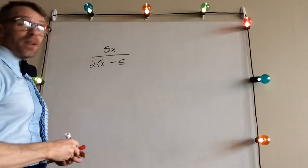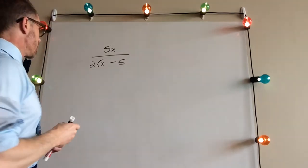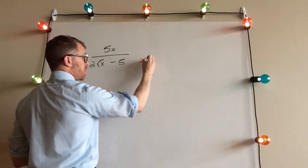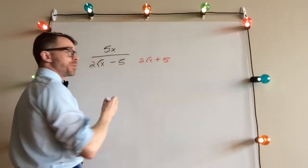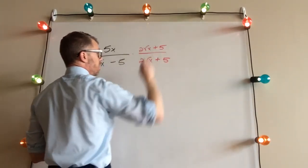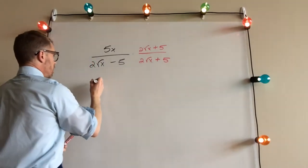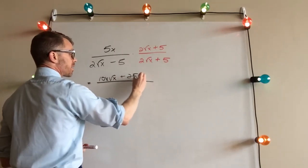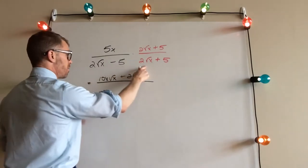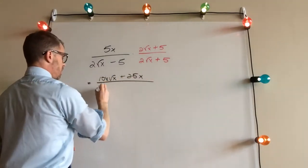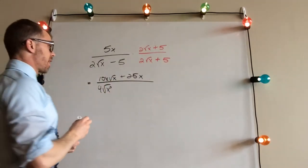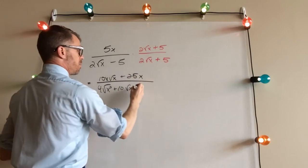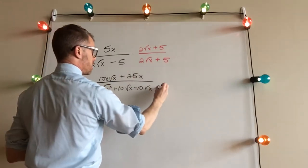This time we have variables, and just a square root radical in the denominator — 2√x minus 5. But again, we're still going to multiply the top and bottom by the conjugate of the denominator: 2√x minus 5 becomes 2√x plus 5. In the numerator, all you have to do is distribute the 5x: we get 10x√x plus 25x. Down below, we FOIL again. First gives 4√(x²). Outer gives positive 10√x. Inner gives minus 10√x. Last gives minus 25.